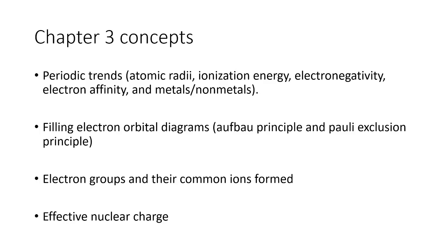For Chapter 3, we're going to be going through a number of periodic trends as well as how to deal with electron orbitals and figuring out where the electrons in our different atoms are and how many of them there are. For all the questions here, you're going to need to have a periodic table with you, so make sure you have one available. Let's start with the periodic trends portion.